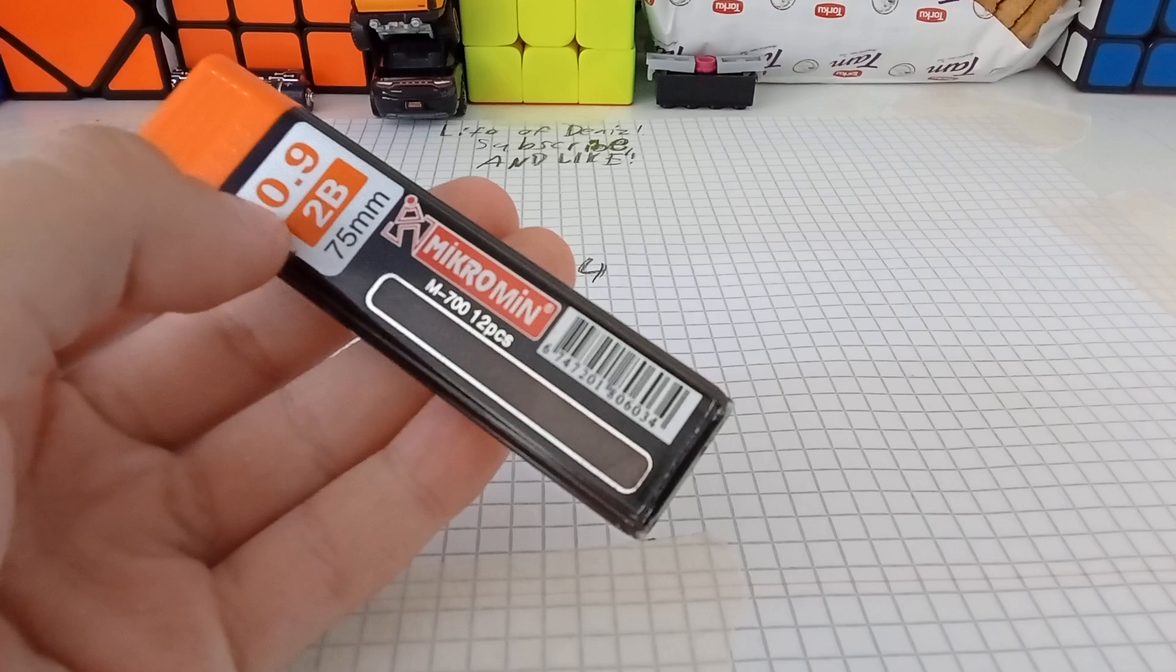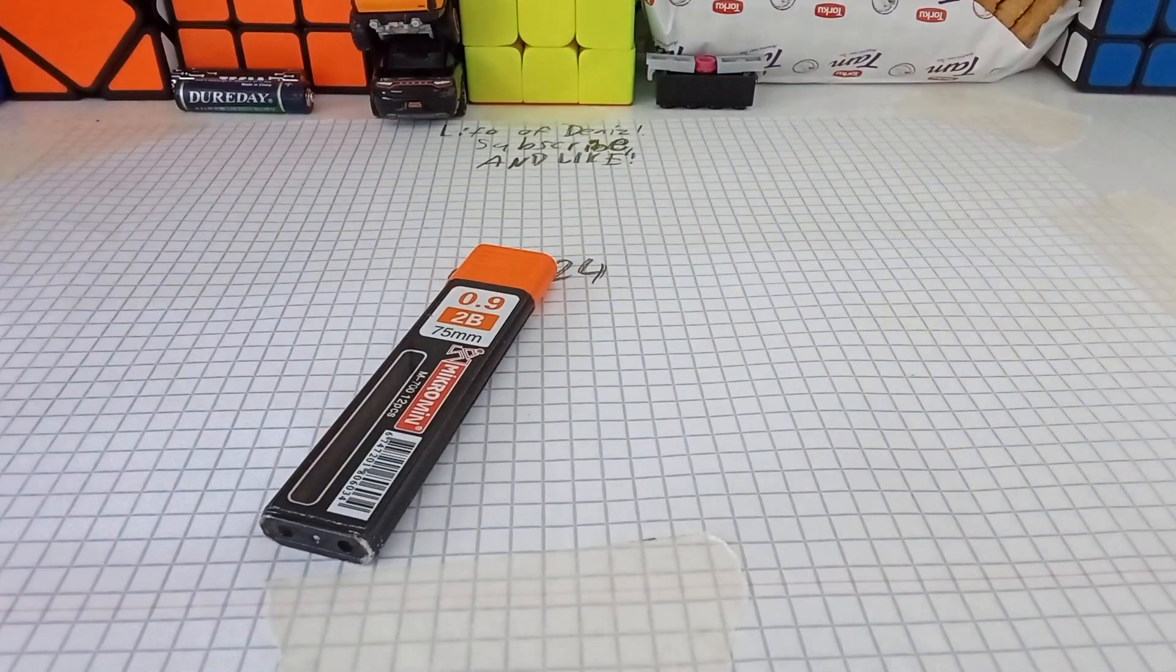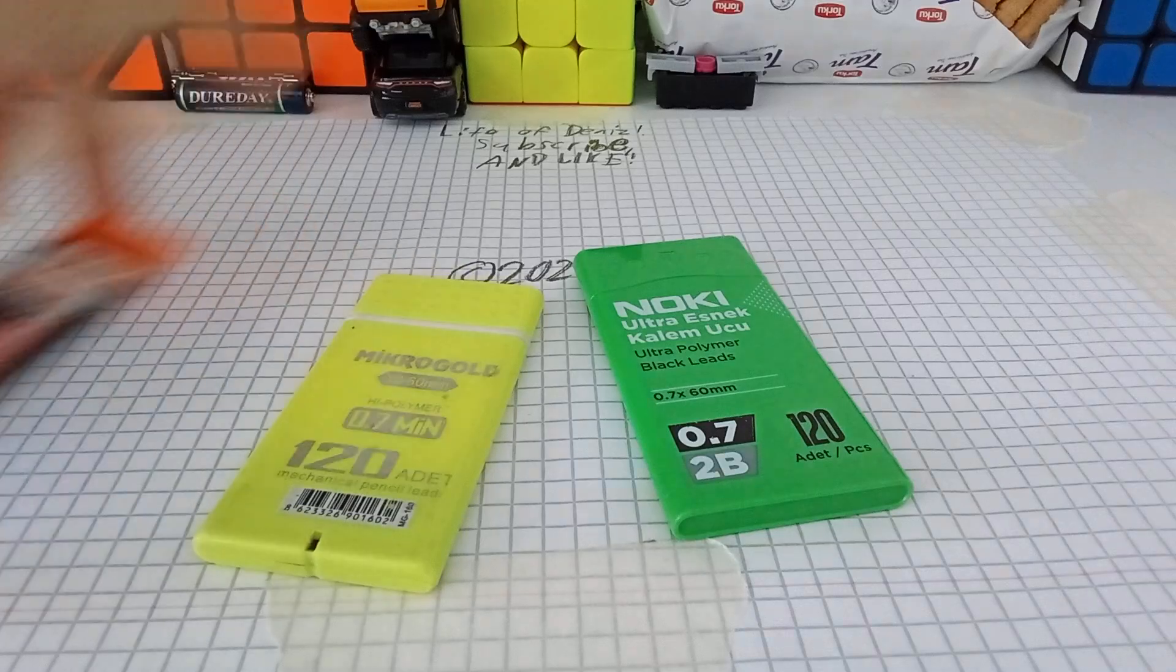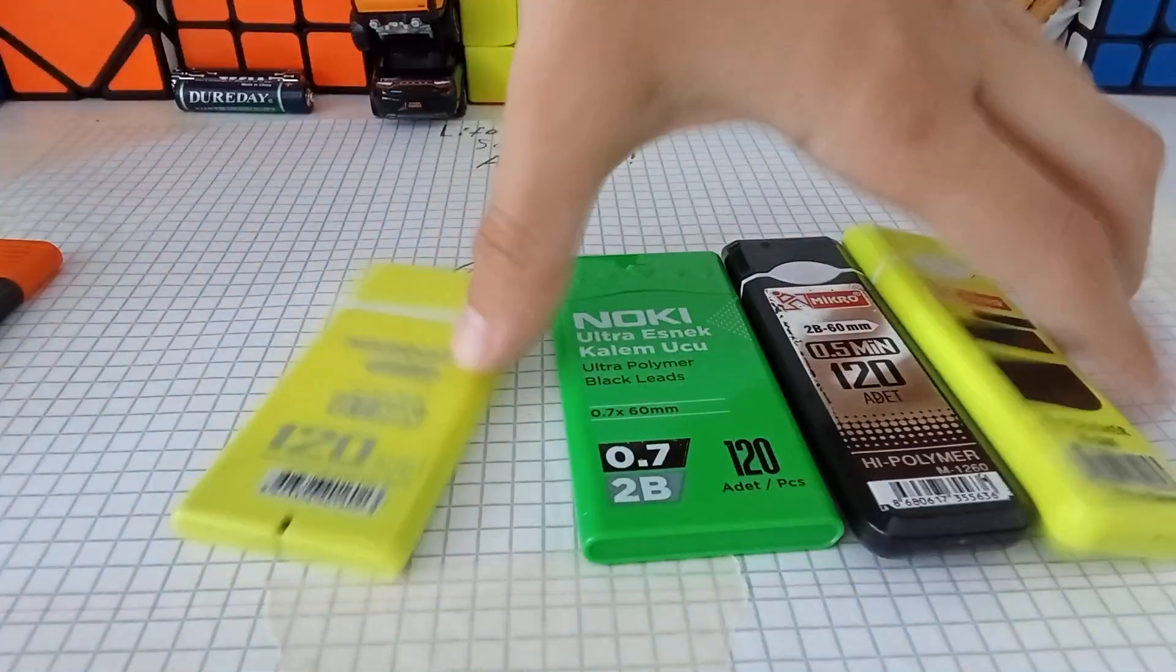What is this? Microman N700. And it's 09. I mean, these guys are 07, this one's 05. This one's the newest one.